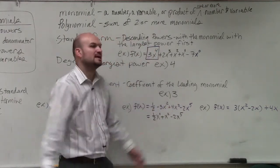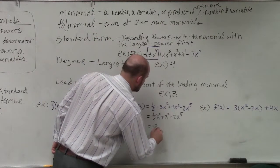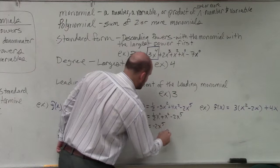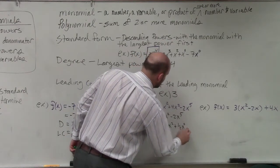So now I have all the powers, but they're not in descending order. So I'm just going to rearrange everything. So it's negative 2x to the fifth plus x squared plus 1 half x to the 0.